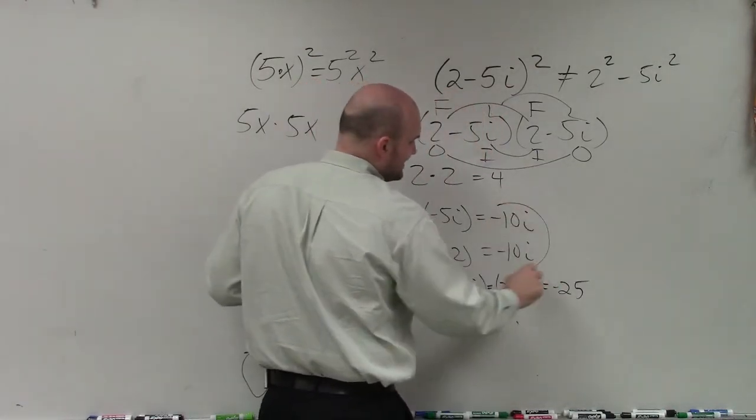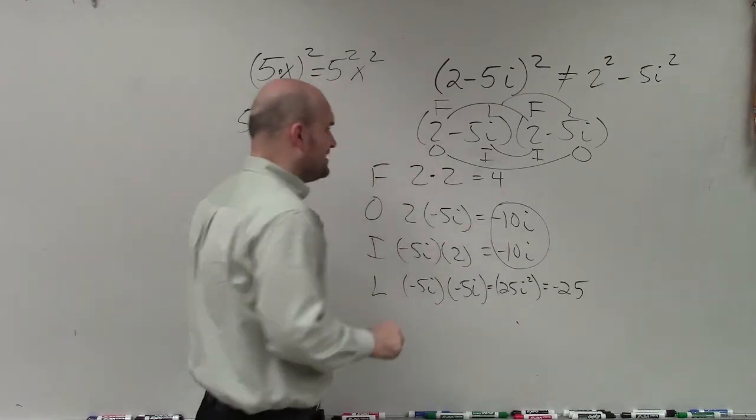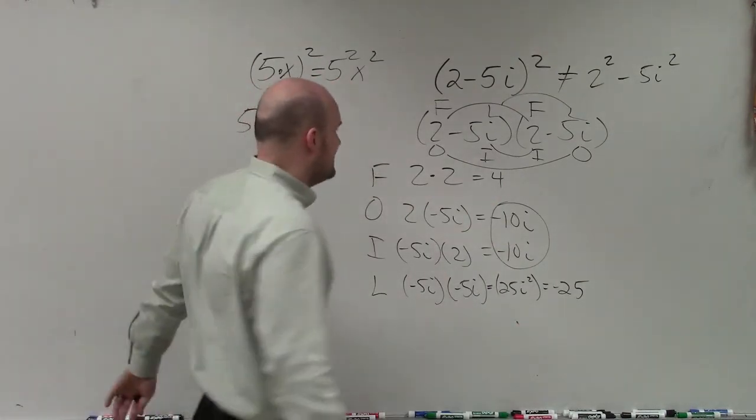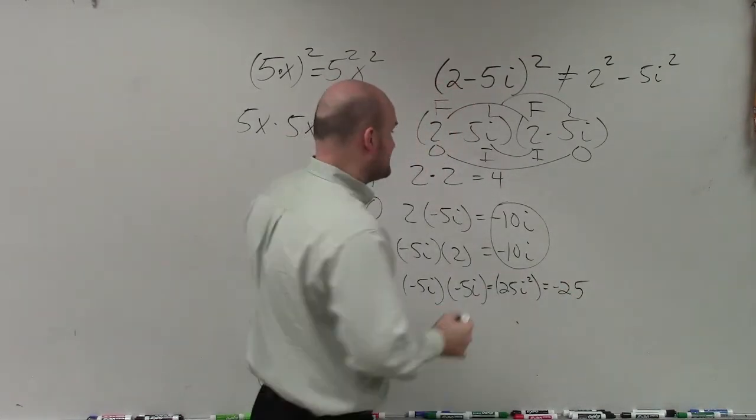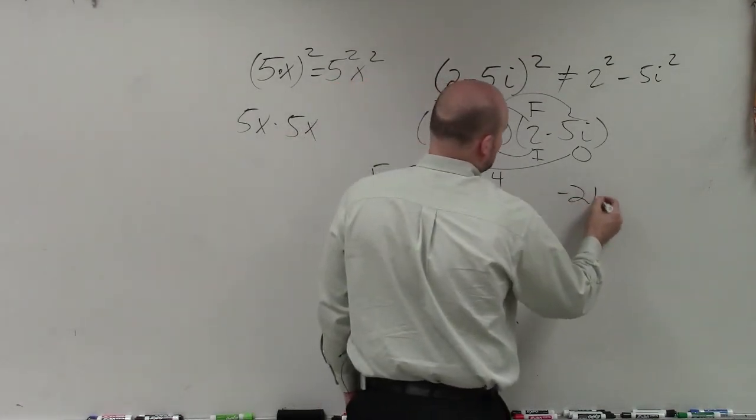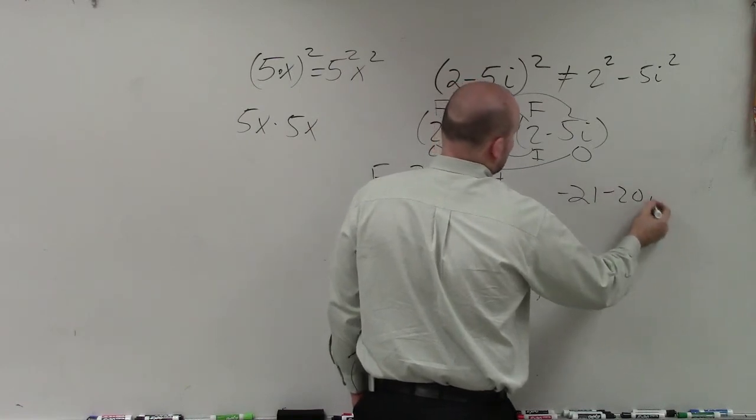Now we can add these two up because they're like terms. So we have negative 10i plus negative 10i is negative 20i. And then 4 plus negative 25 is negative 21, giving us -21 - 20i.